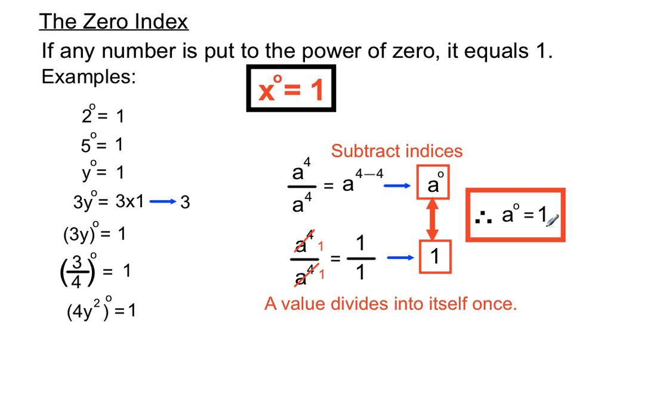Anyway, that's why the zero index rule is there. Anything to the power of zero equals one. Just watch out for those tricky ones, where it's only one section of the term that's being put to the power of zero. Just keep your wits about you there, and keep your concentration.